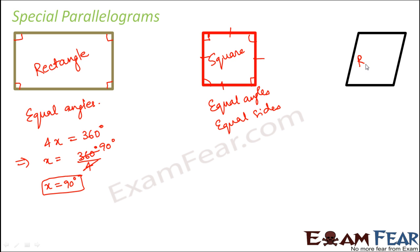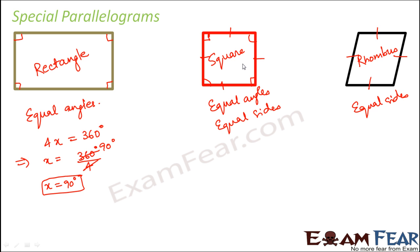The next special parallelogram is a rhombus. The speciality of rhombus is that it has equal sides but not equal angles. All sides are equal like a square, but all angles are not equal. Basically, a square is like a combination of both rectangle and rhombus — rectangle has all equal angles, rhombus has all equal sides, and square has both features: all equal angles and all equal sides.